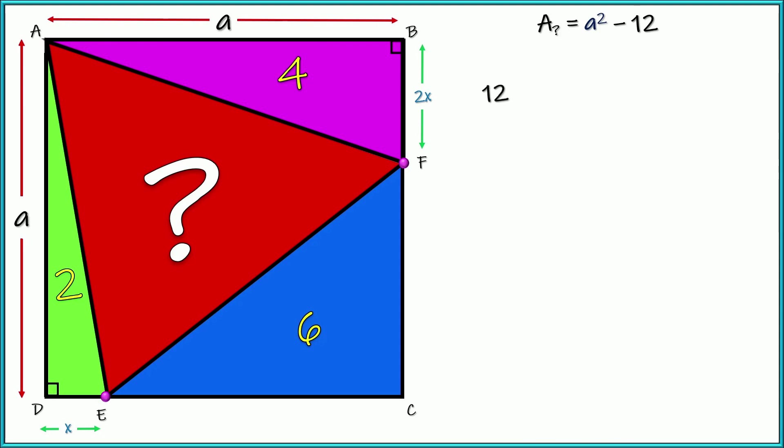All right. Now, 12 is the sum of all of those triangles. So that 12 right there, that's why we're subtracting it. And let's go ahead and write an expression for each of those three triangles. So 2 is one half X times A. And then 4 is one half 2X times A. And the 6 right here is one half base times height. We need to come up with some expressions for the base and the height.